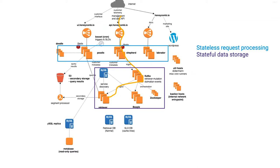All of our front-end services are stateless, but then we also have a lot of Kafka, Retriever, and MySQL. Retriever is the storage engine we've written ourselves to store all this data. So we deploy our infrastructure incrementally to reduce the blast radius. We're able to do this because we do it automatically multiple times a day, and we can test the effects of changes to our infrastructure with lower risk.